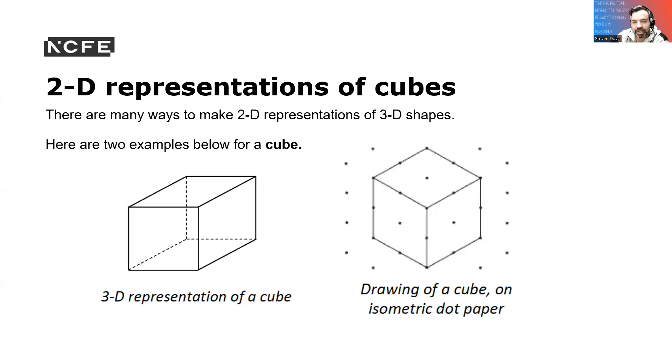There are many ways to make a 2D representation of 3D shapes. Here are two examples given below. I have to say I've never used the dotted paper one before. I have done this one on many occasions. 3D representation of a cube or drawing of a cube on isometric dotted paper.